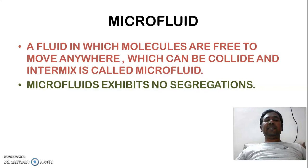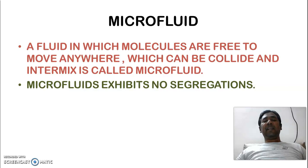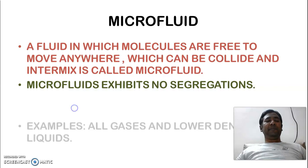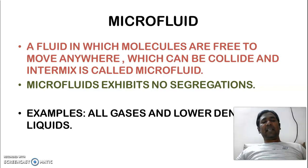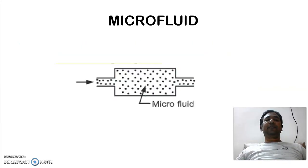Microfluids exhibit no segregation — they are not segregating, not accumulating at one point. The examples are all kinds of gases and lower density liquids. Lower density liquids like HCl — a 0.1 normal HCl can act as a lower density liquid, so it can act as a microfluid. All kinds of gases like hydrogen, nitrogen, helium, and chlorine are also microfluids.